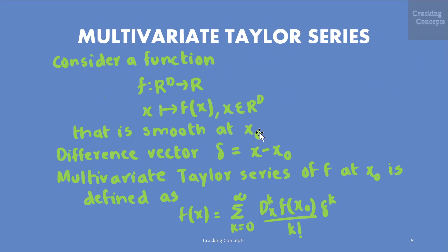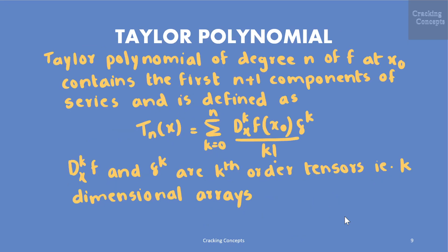Now let us see about multivariate Taylor series. We consider a function f mapping from d-dimensional space to one-dimensional space, where f is smooth at the point x₀. When we define the difference vector δ = x − x₀, the multivariate Taylor series of f at x₀ is: f(x) = Σ(k=0 to ∞) [f⁽ᵏ⁾(x₀) · δᵏ] / k!. The Taylor polynomial of degree n contains the first n+1 components: Tₙ(x) = Σ(k=0 to n) [f⁽ᵏ⁾(x₀) · δᵏ] / k!.